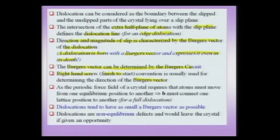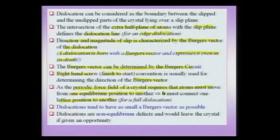The periodic force field of a crystal requires atoms to move from one equilibrium position to another — this implies automatically that the Burgers vector must connect one lattice position to another, for a full dislocation. The energy of a dislocation goes as the square of the modulus of the Burgers vector, so the dislocation tends to have as small a Burgers vector as possible — it will always choose the smallest lattice translation vector.